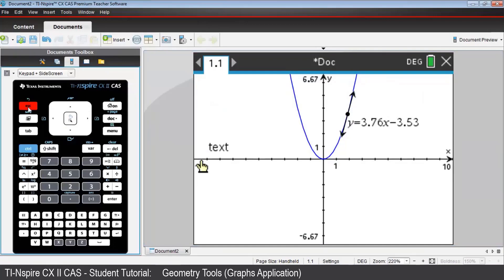Notice now that the icon in the top left corner has disappeared, and the equation of the tangent line appears near the line and the point of tangency.